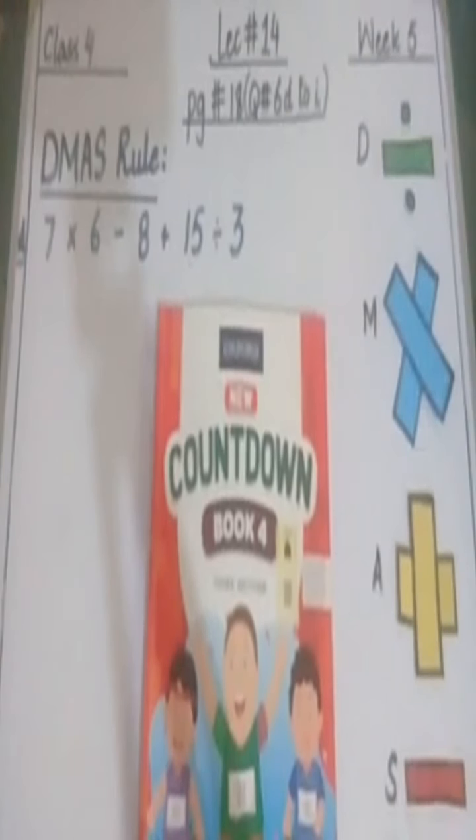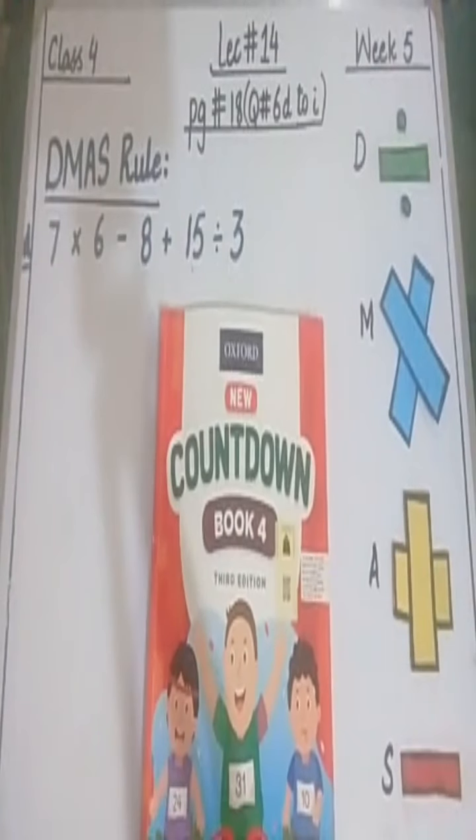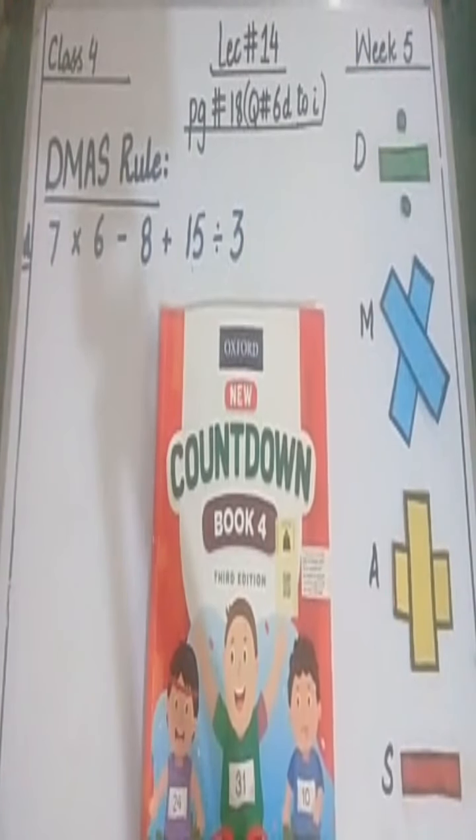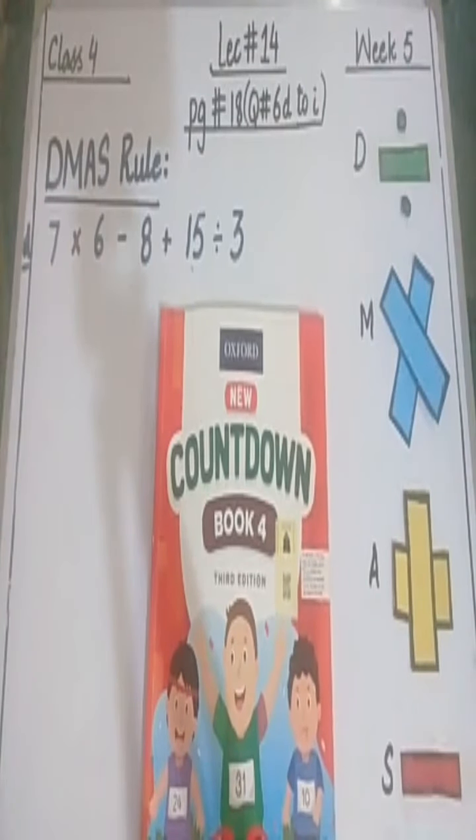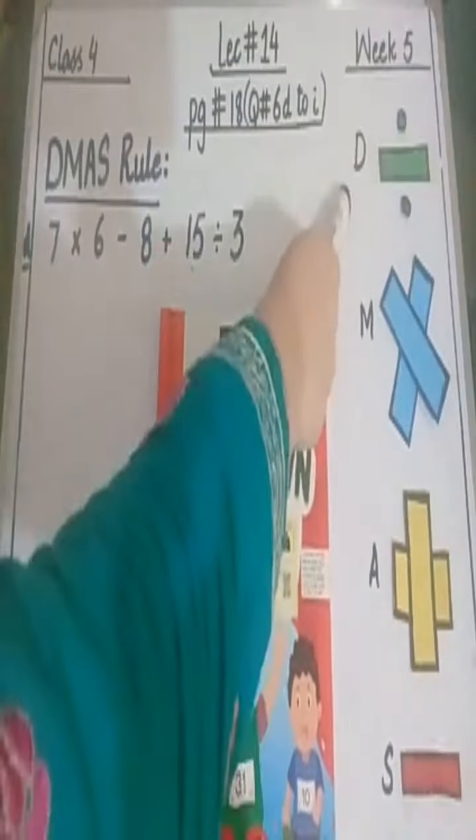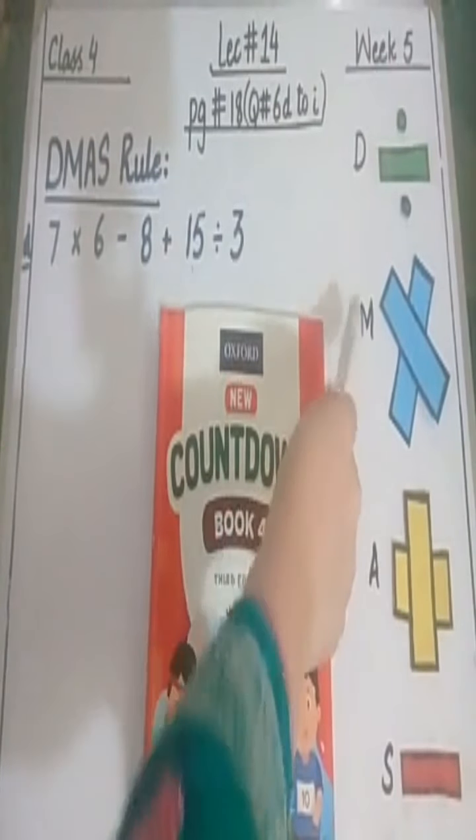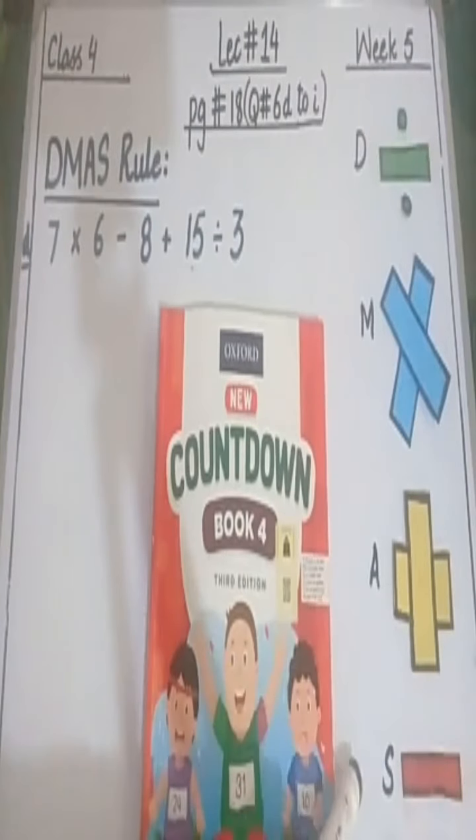We started a new topic which was the DMAS rule. In the DMAS rule, there is a sequence of arithmetic operations - the order to solve first. The sequence is: D for Division, M for Multiplication, A for Addition, and S for Subtraction. So this is the DMAS rule.